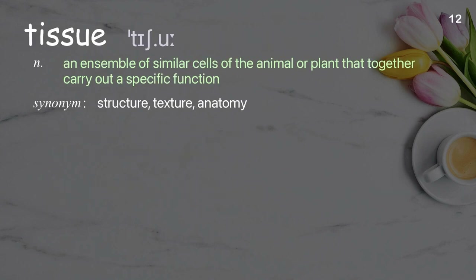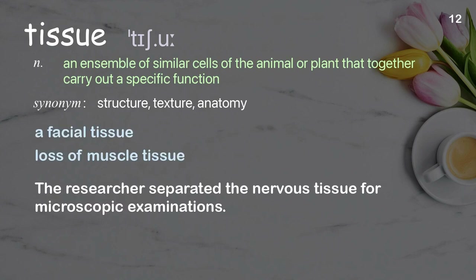Tissue: an ensemble of similar cells of the animal or plant that together carry out a specific function. Examples: A facial tissue. Loss of muscle tissue. The researcher separated the nervous tissue for microscopic examinations.